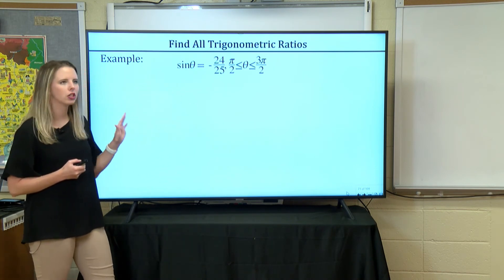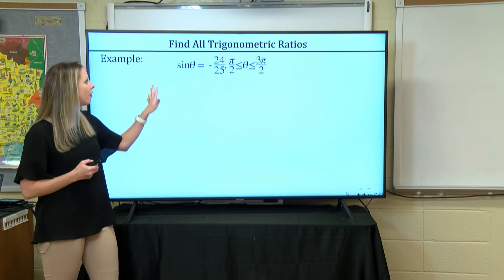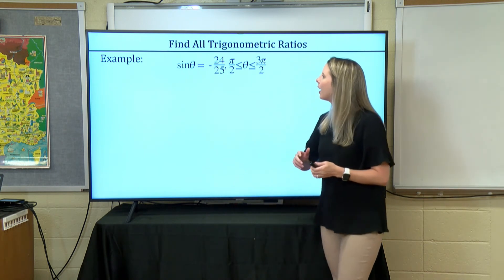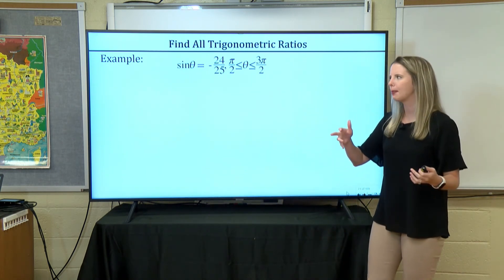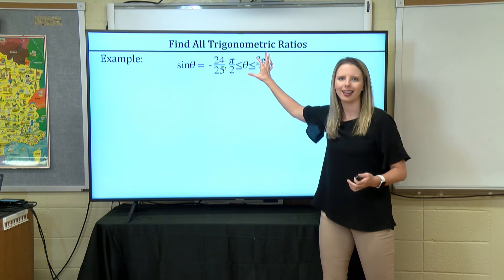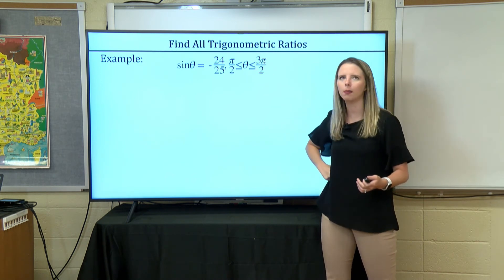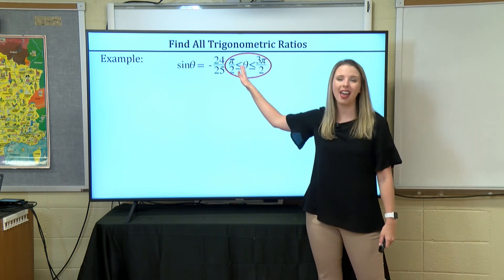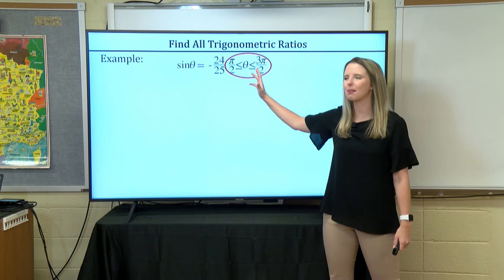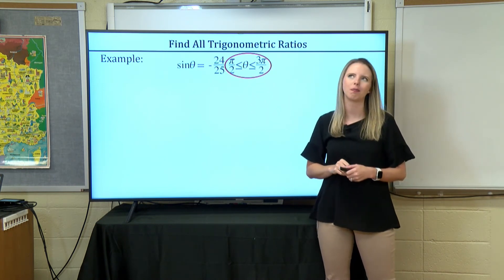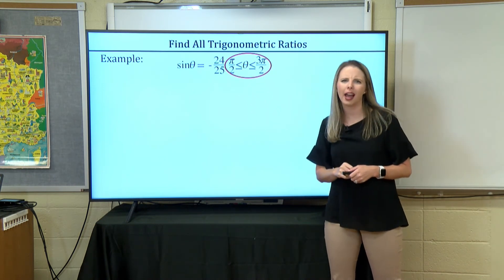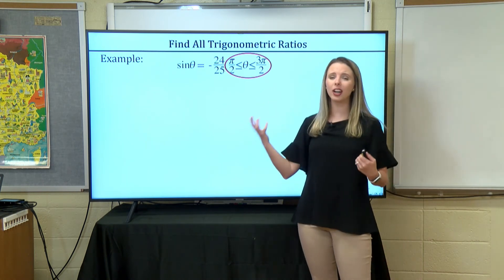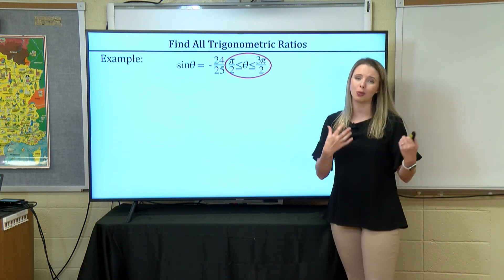Now let's find all six trig ratios for this scenario: sine of theta equals negative 24 over 25. There's also a condition on the screen telling us our angle theta is somewhere between pi over 2 and 3π over 2. We may not be as familiar with radian measures, but we can convert them to degrees using the formula radians times 180 over pi.